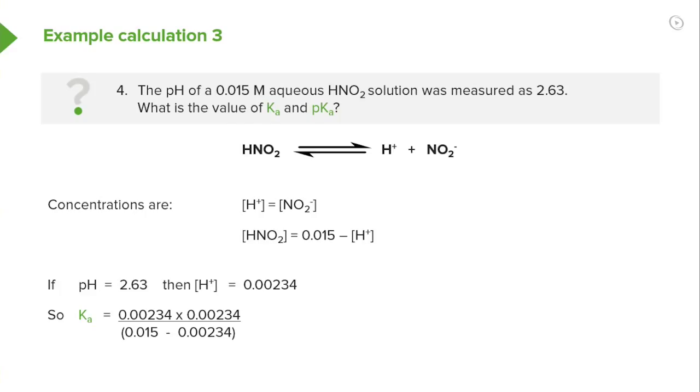If we look at that a bit more closely what we are saying here is that the concentration of H plus equals the concentration of NO2 minus. Therefore the product of this NO2 minus and H plus must be equal to 0.00234 multiplied by itself. The remaining amount of non-dissociated HNO2 is given by our starting concentration minus the amount which has been converted which we know from the concentration of H plus.